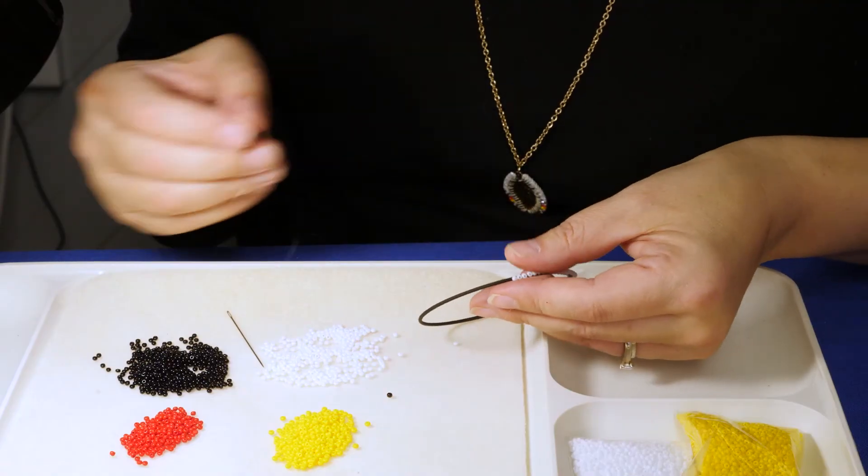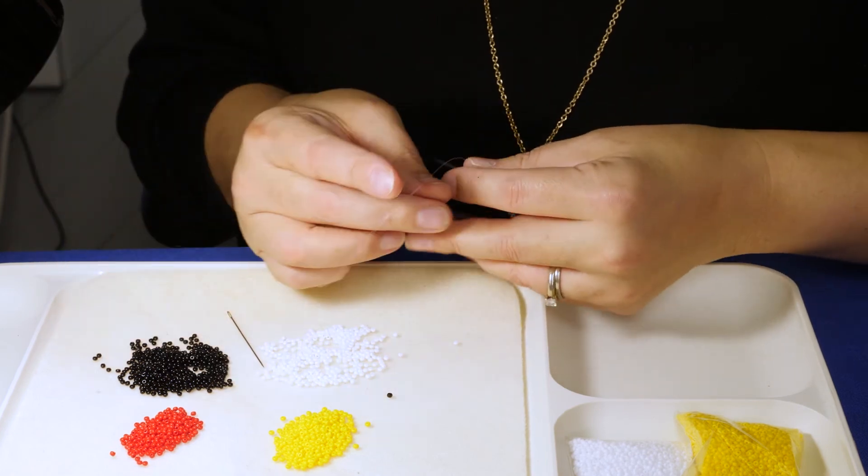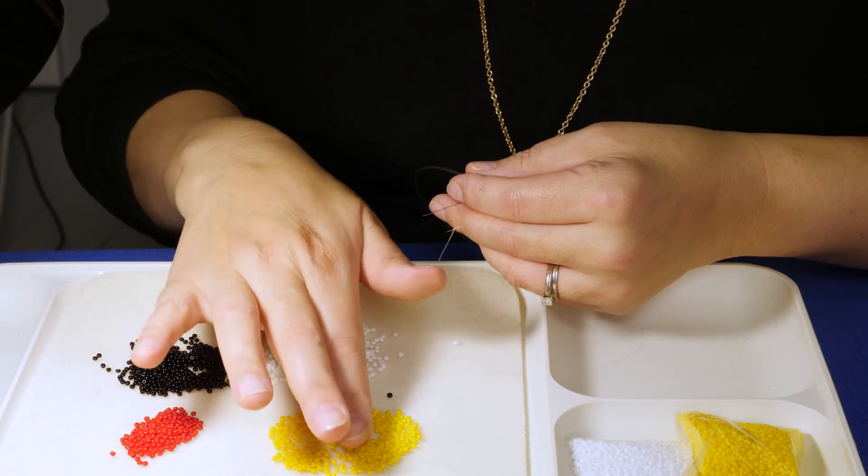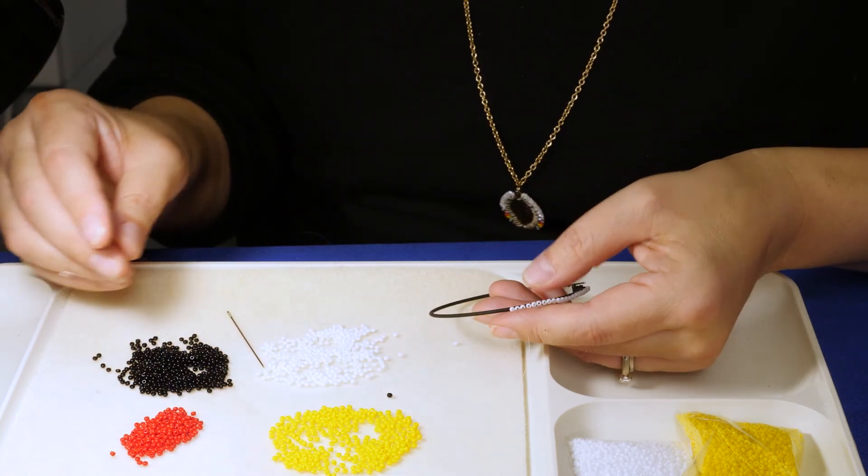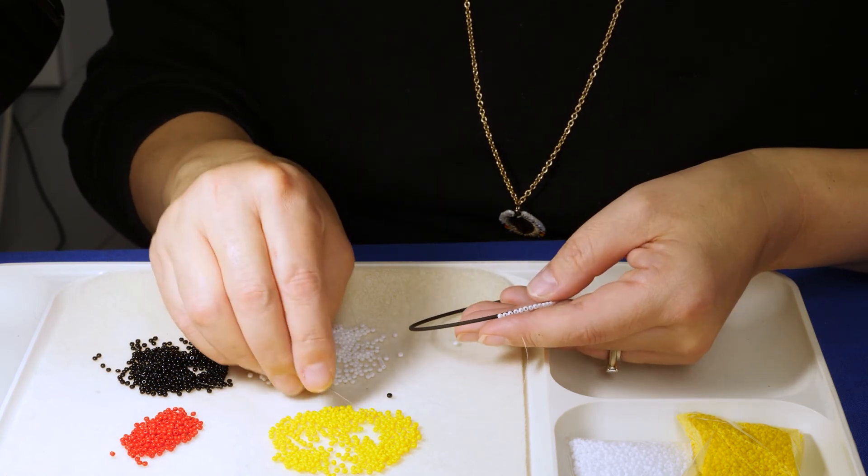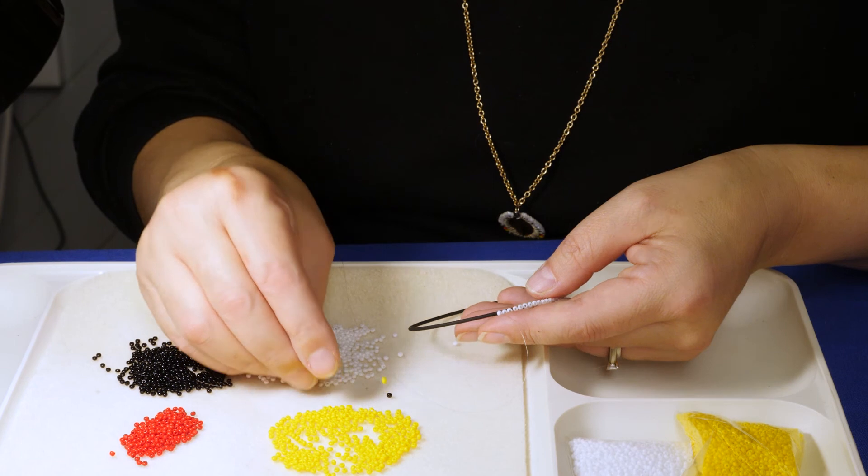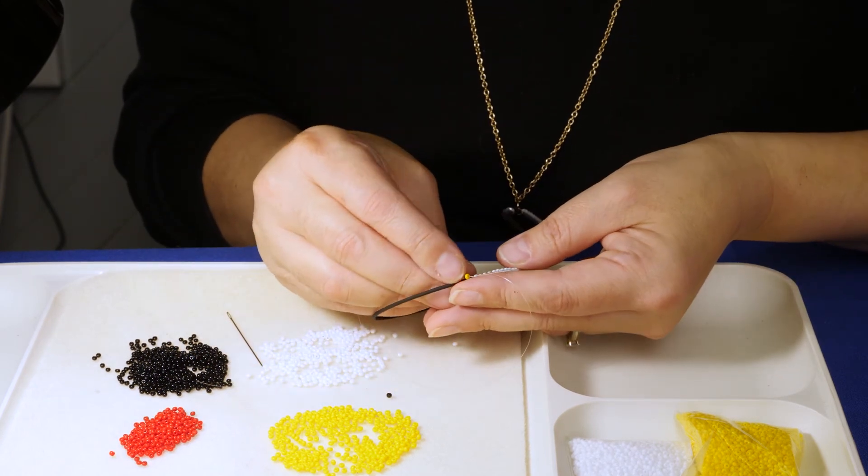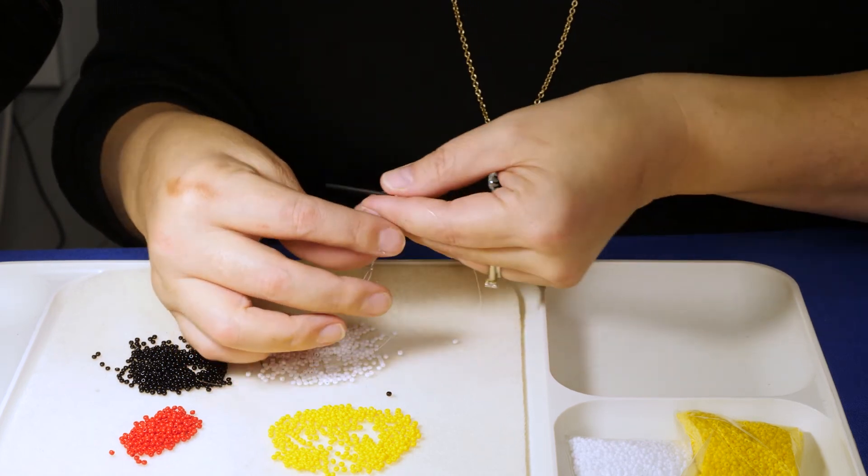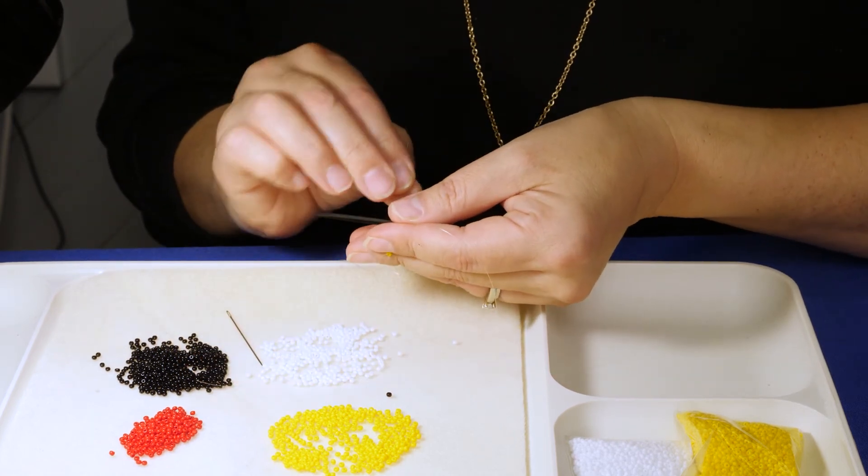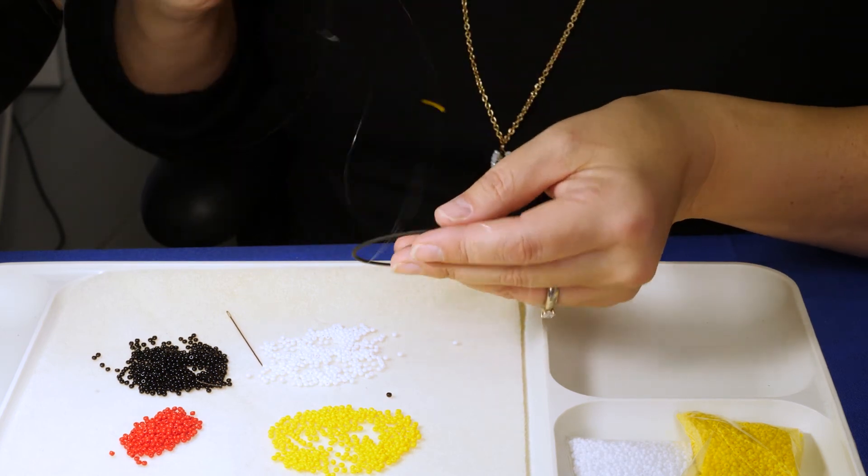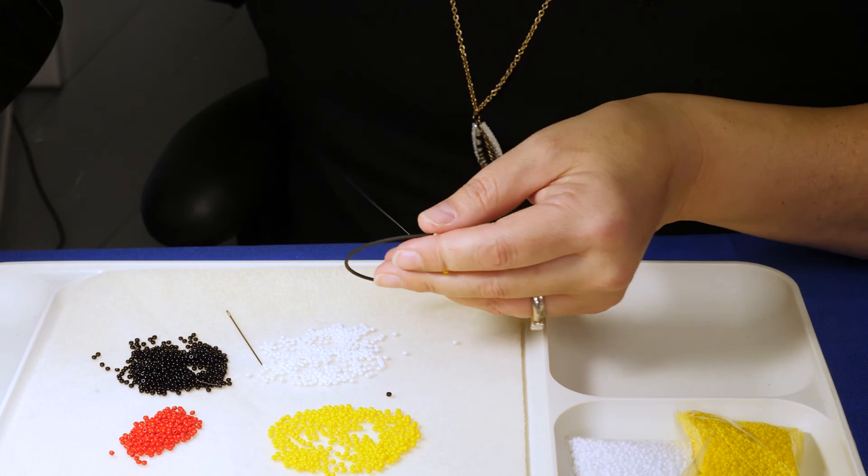All right, so we're here now. We're going to move to our next color, which is yellow. We're going to try to get one that is the closest size to the white as possible, because for that first level you want everything as close to the same size as possible so that when you move to your second level, everything is flat and even. I'll show you that.